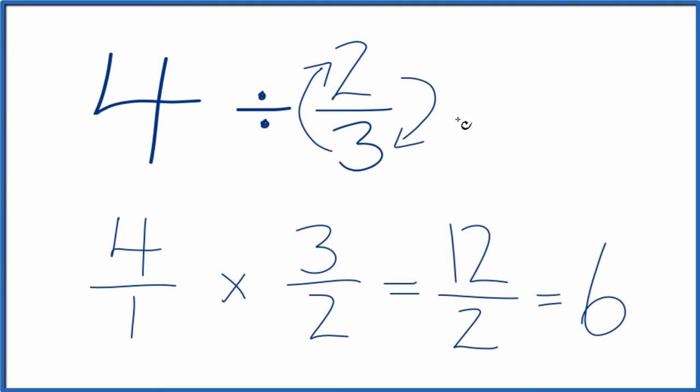So 4 divided by 2 thirds equals 6. If you took 6 and multiplied it by 2 thirds, you get 4. So we did this correctly.